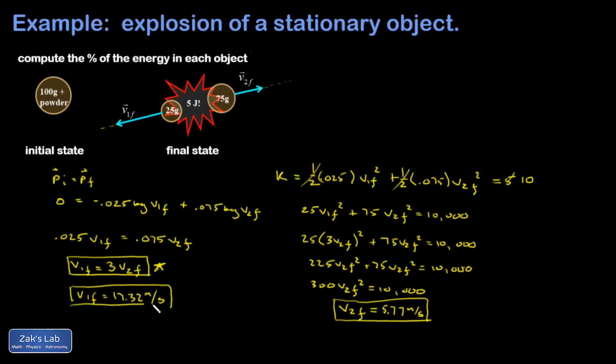And then the real question was what percent of that 5 joules goes into each of these objects? So I can get the energy of each one now. So K1, the energy of the small mass, is one-half times the mass, 0.025, times the speed squared. And I get 3.75 joules. And if I take that 3.75 joules and divide by the 5 joules total that was distributed between the objects, I get exactly 75%.